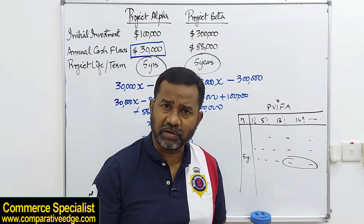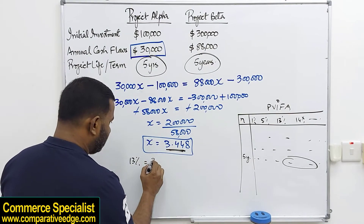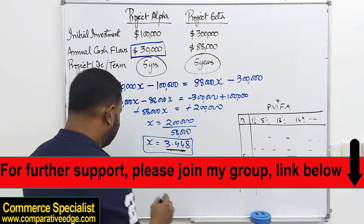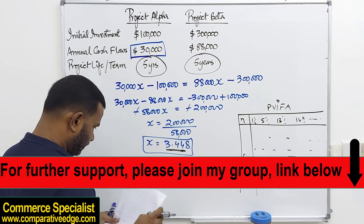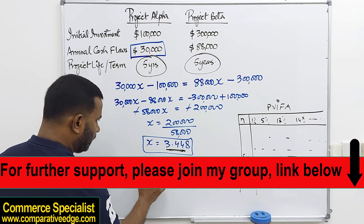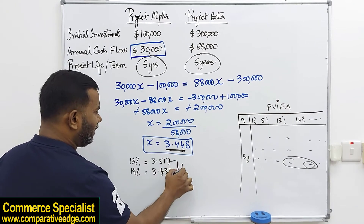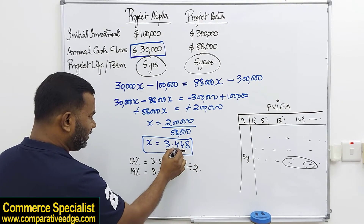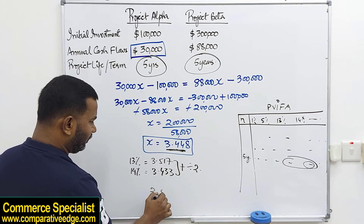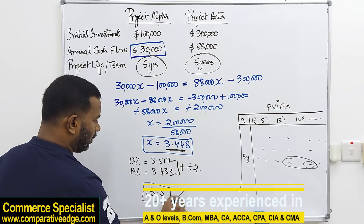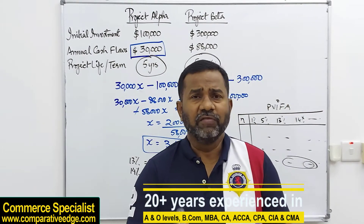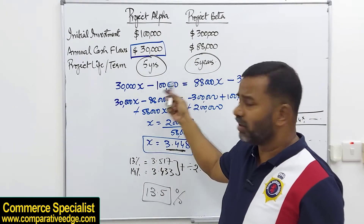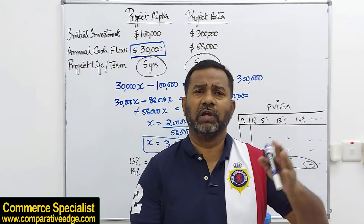Looking in the table, the value 3.448 falls between 13% and 14%. At 13% the annuity factor is 3.517, and at 14% it is 3.433. Adding these two and dividing by 2 gives an average of approximately 3.475, which corresponds to roughly 13.5%. So if the discount rate is 13.5% we are indifferent between choosing project Alpha or project Beta.